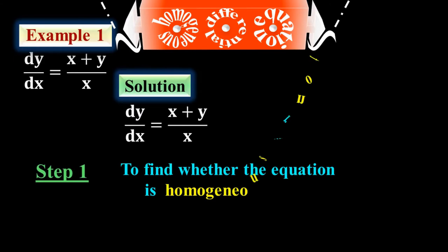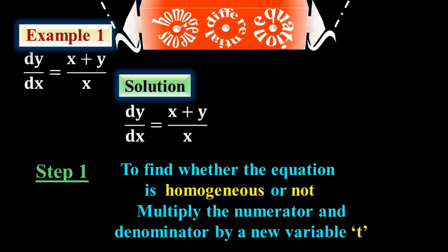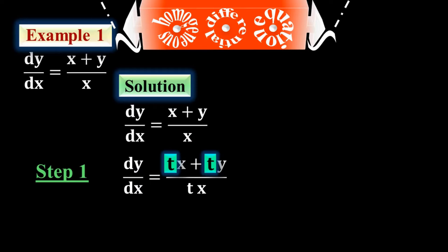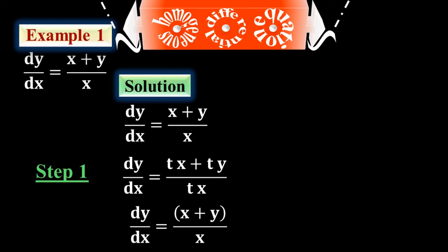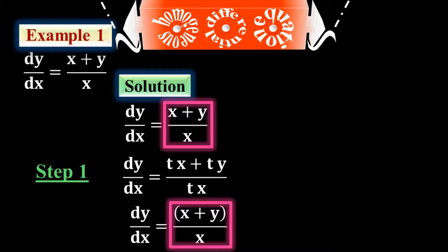Example 1: dy/dx = (x + y)/x. Step 1 — verify homogeneity by substituting tx and ty: (tx + ty)/(tx) = (x + y)/x, because t cancels. This gives back the exact f(x, y), so it is a homogeneous differential equation. Step 2 — convert to f(y/x) form. Multiply numerator and denominator by 1/x to get dy/dx = 1 + y/x.